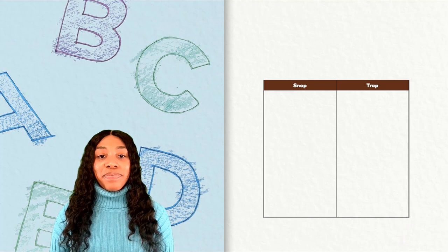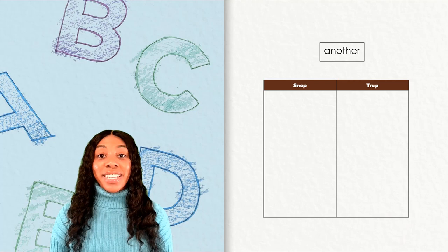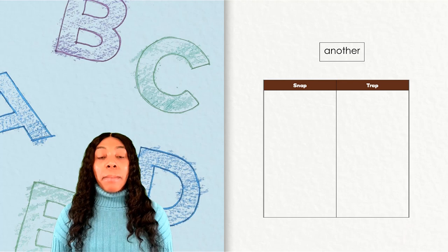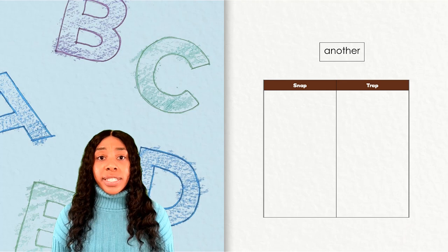Here's the first word: another. In this word, we see the schwa sound spelled A, as we have been talking about. But there is also a second schwa sound, the O. And then the last syllable has the sound 'ther.' When a word has two schwa sounds, it is tricky. So 'another' goes in the track column.